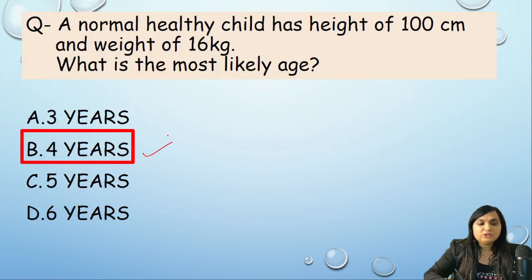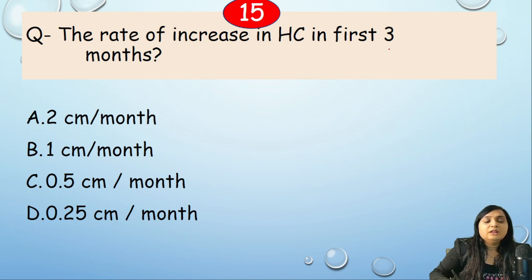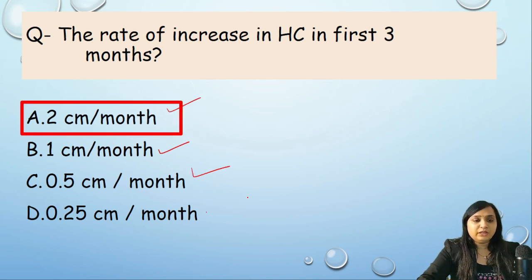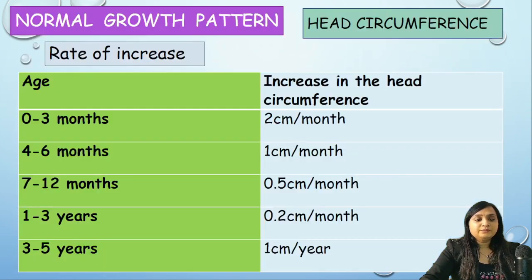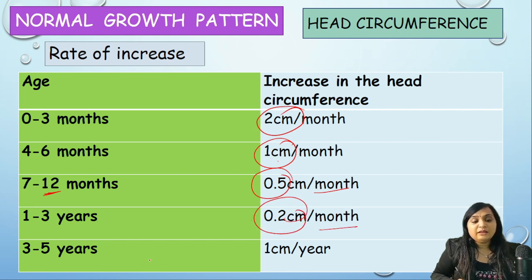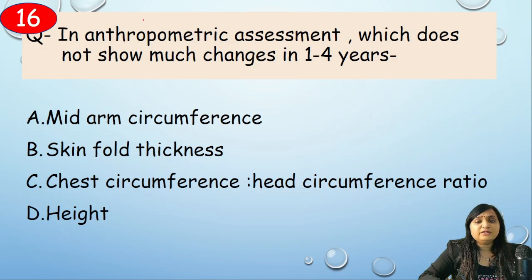Rate of increase in head circumference in the first 3 months — 2 cm/month, 1 cm/month, 0.5 cm/month, or 0.25 cm/month? Correct answer: option A, 2 cm/month. To remember: 0–3 months = 2 cm/month; 4–6 months = 1 cm/month; up to 12 months = 0.5 cm/month; 1–2 years = 0.2 cm/month; 3–5 years = 1 cm/year.